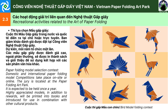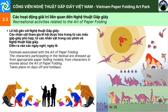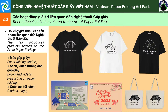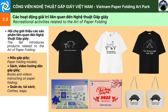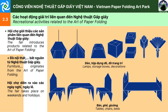Các mẫu gấp giấy được đánh giá cao, ngoài phần thưởng, sẽ được in thành sách và giới thiệu để sử dụng kết hợp với các sản phẩm văn hóa khác. Lễ hội gắn với nghệ thuật gấp giấy: các nhân vật tham gia lễ hội được hóa trang từ các mẫu gấp giấy phù hợp, từ các nhân vật trong phim về nghệ thuật gấp giấy, diễn ra vào các ngày nghỉ, ngày lễ. Hội chợ giới thiệu các sản phẩm liên quan đến nghệ thuật gấp giấy, ví dụ như mẫu gấp giấy, sách, video hướng dẫn gấp giấy, quần áo, đồ nội thất, v.v., bắt nguồn từ nghệ thuật gấp giấy, diễn ra vào các ngày nghỉ, ngày lễ.